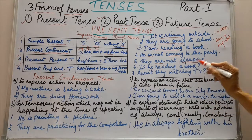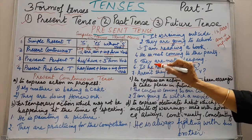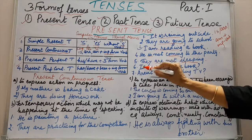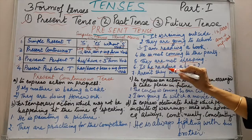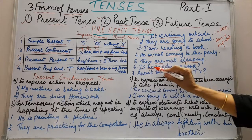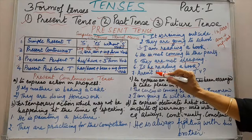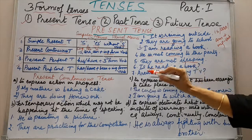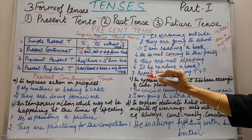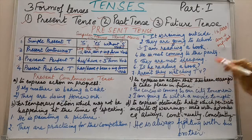Next, interrogative sentence: is he reading a book? He is singular, so we have used is, which comes in the beginning of the sentence — is, then pronoun, then ing form of verb. Aren't they watching TV? They is plural, so we have used aren't watching. So: aren't they watching TV?